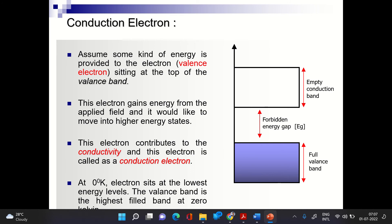Energy can be given in three ways: thermally (heating the sample), by electromagnetic radiation (light), or by applying an electric field. An electron sitting at the top of the valence band can be excited to the conduction band using any of these methods. When energy equal to Eg is given, the electron moves to the conduction band, and the vacancy it leaves behind is called a hole.